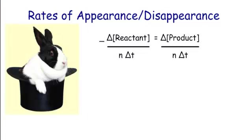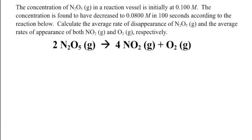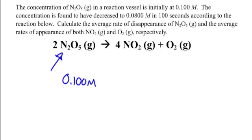Let's move on to rates of appearance and disappearance — this is pretty easy. Even though it looks like a crazy equation, all the rates of appearance and disappearance is the change in concentration over the change in time. For example, let's say we have N2O5 breaking down. The concentration of N2O5 starts at 0.100 molar initially, and it decreases to 0.008 molar. We take our final concentration minus our initial concentration.